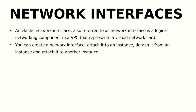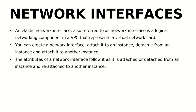You can create a network interface, attach it to an instance, detach it from an instance, and attach it to another instance. By default, whenever you launch your EC2 instances you get the primary network interface. In addition to that, if you want to create more network interfaces you can create them, attach them to an existing instance, detach them, and attach them to another instance.